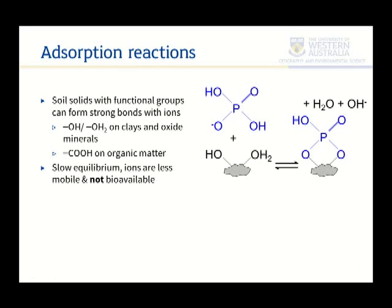The normal consequence of that adsorption of phosphate is release of hydroxide, which means the reaction will be strongly pH-dependent. Anything that tends to decrease the concentration of hydroxide effectively pulls that equilibrium across by Le Chatelier's principle, and results in adsorption of more phosphate. That would mean low pH, because low pH has low concentrations of hydroxide. So phosphate and other oxyanions tend to be more adsorbed at low pH — that's a general consequence. The reverse is almost true for cations.